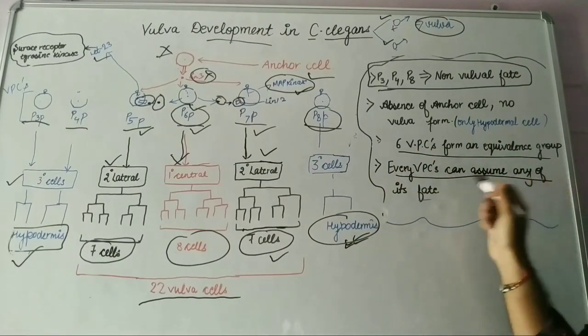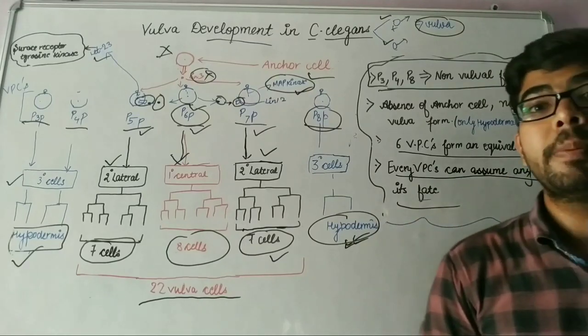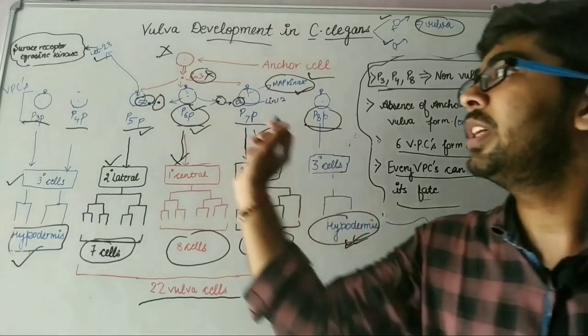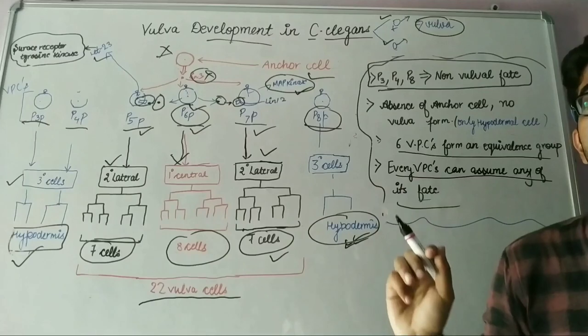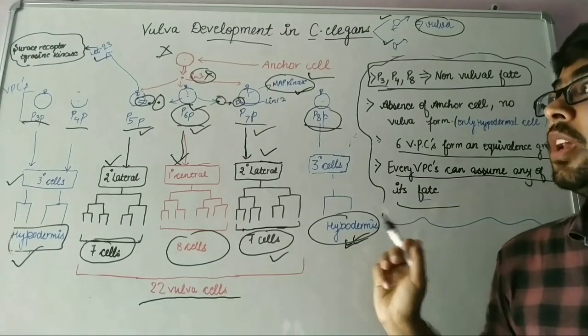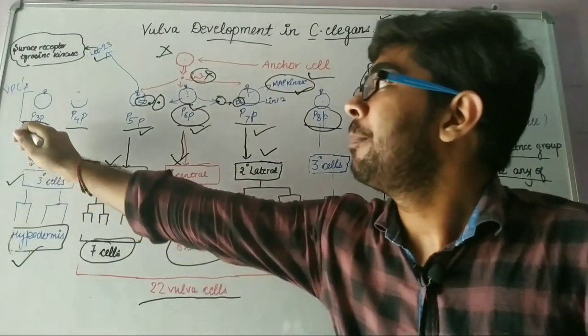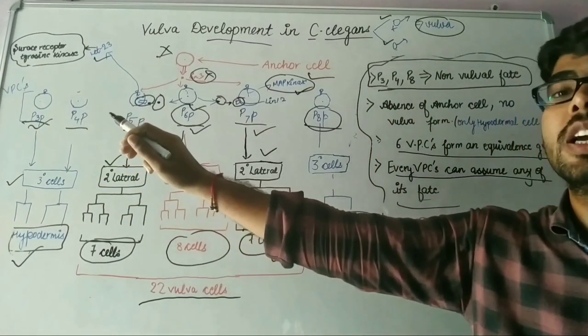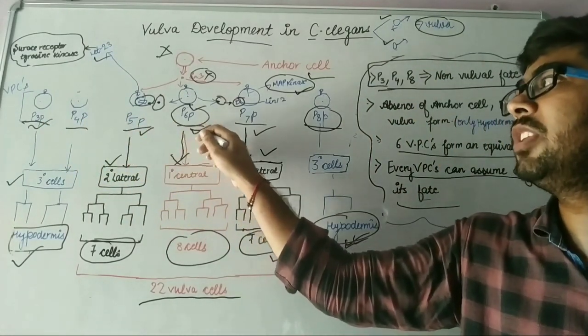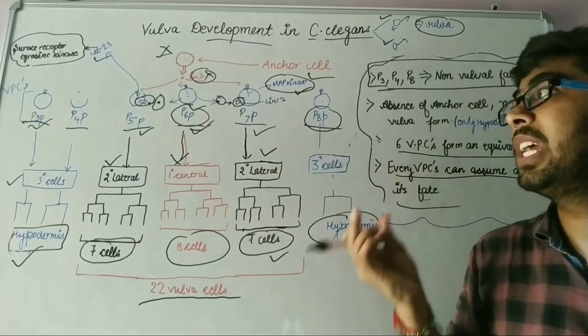Every VPC can adopt any of its fate. It means that all of the VPCs have the same kind of fate. When the P3P position is changed with P6P vulva precursor cell, then P3P cell will produce primary central fate and lead to formation of 8 vulva cells.